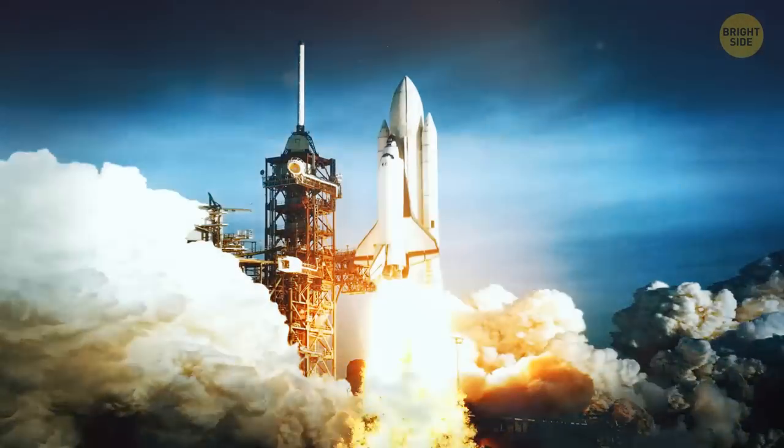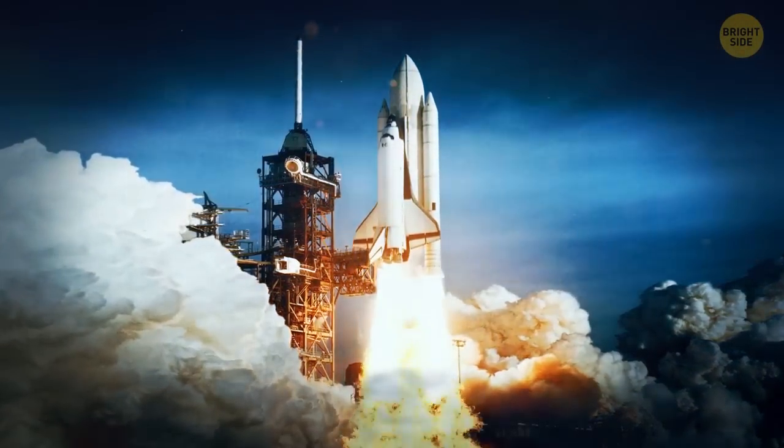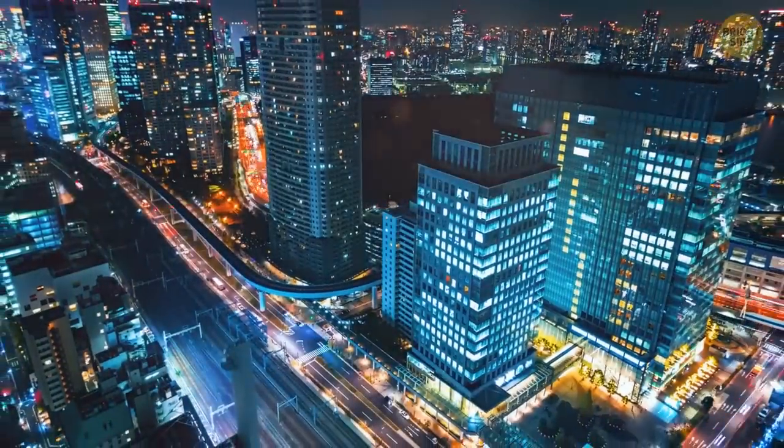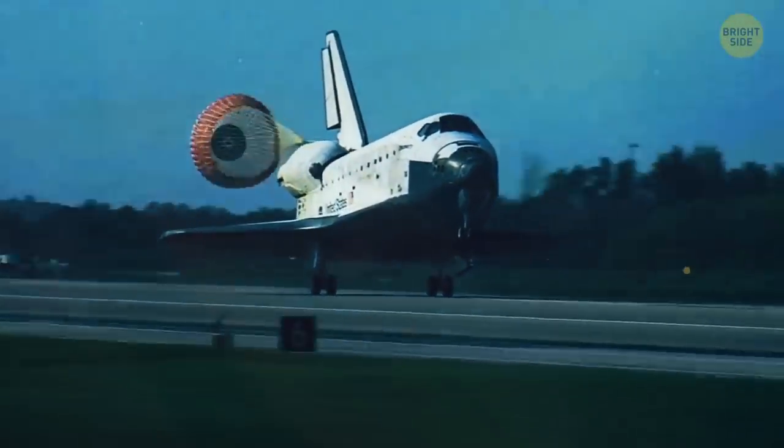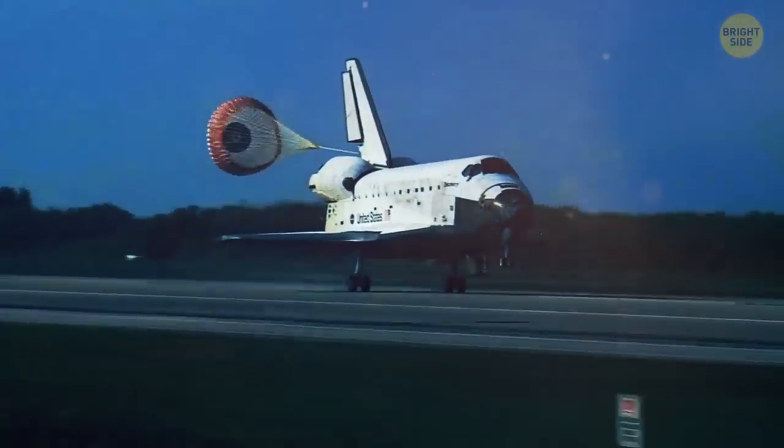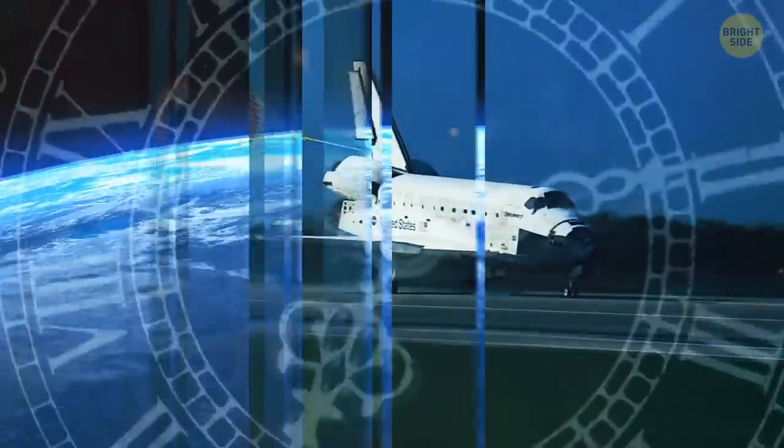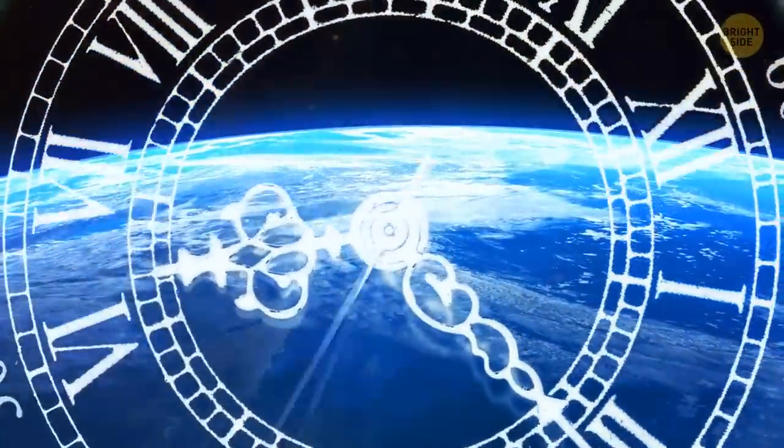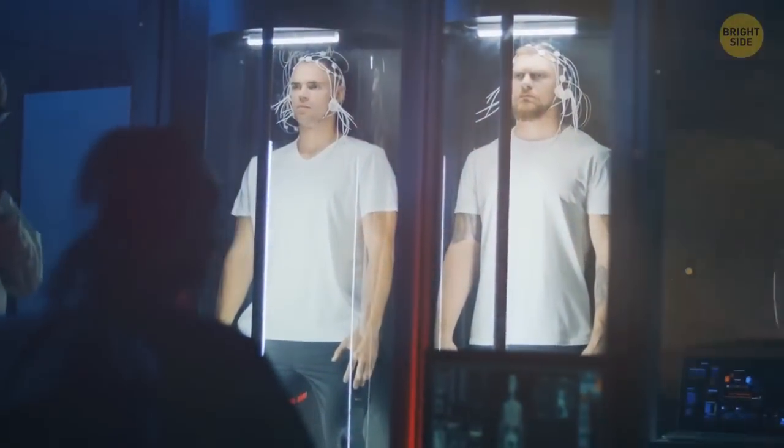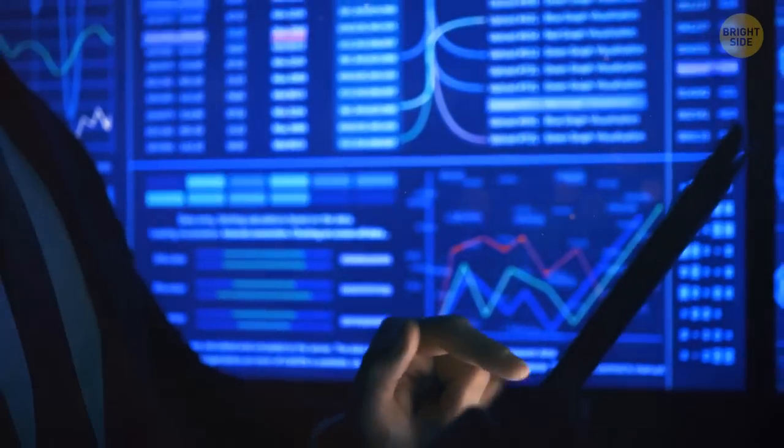The classic example for this is the twin scenario. One twin blasts off in a spaceship traveling close to the speed of light, and the other stays behind on Earth. When the space traveling twin returns to Earth, she's only aged a couple of years. But she's shocked to find that her Earth-bound sister has aged over a decade. Of course, no one has performed that experiment in real life, but there's evidence that it's real.